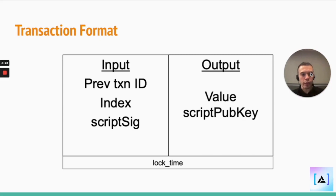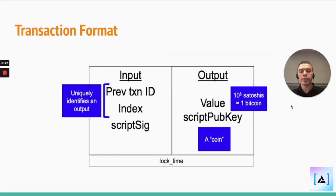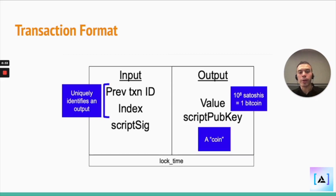This is what a transaction looks like in the Bitcoin system. So the way it works is, when you're constructing your transactions, you have to literally point back to the specific UTXO in order to spend it.